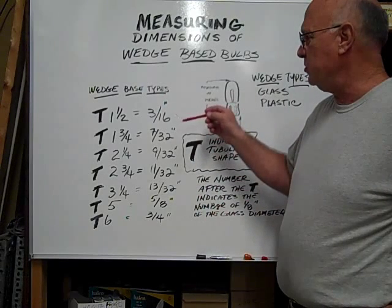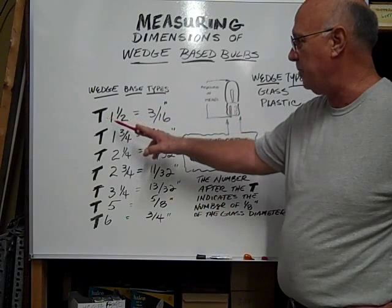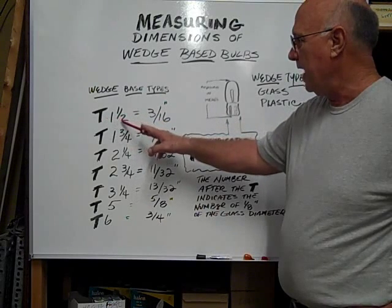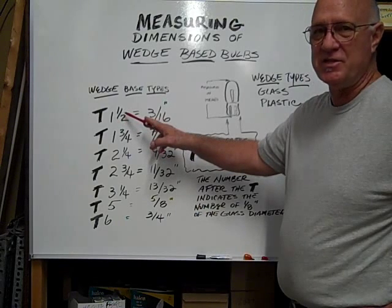The smallest size usually is a T one and a half. The T again is tubular-shaped, and the one and a half denotes the dimension in eighths of an inch.